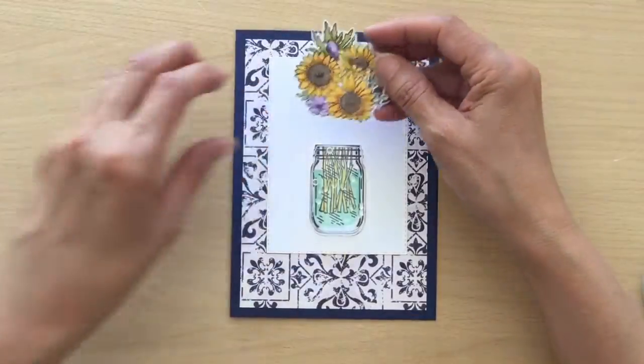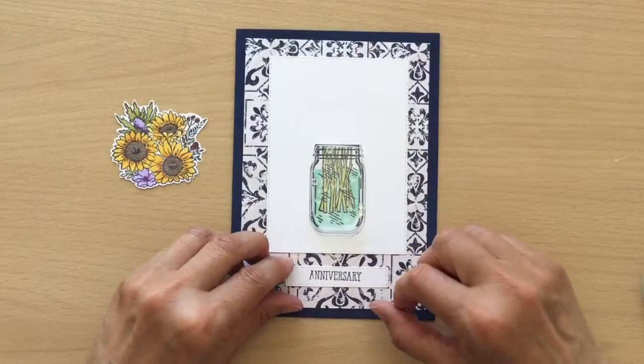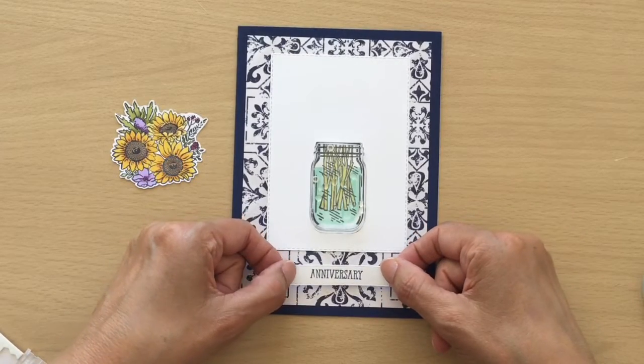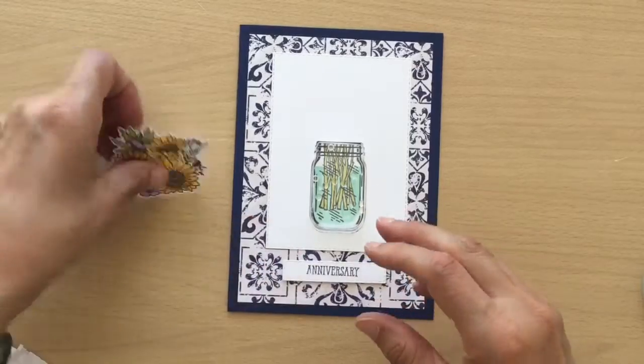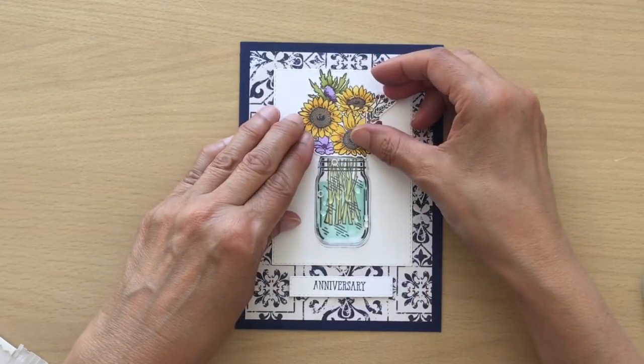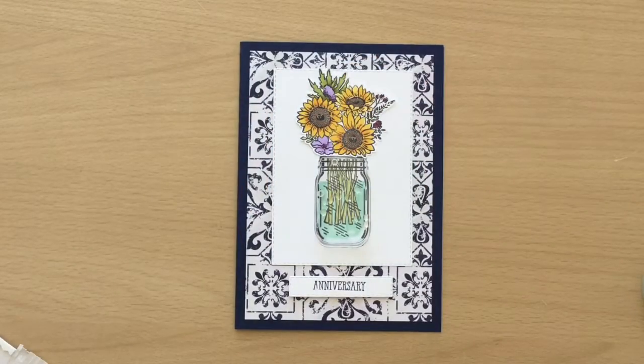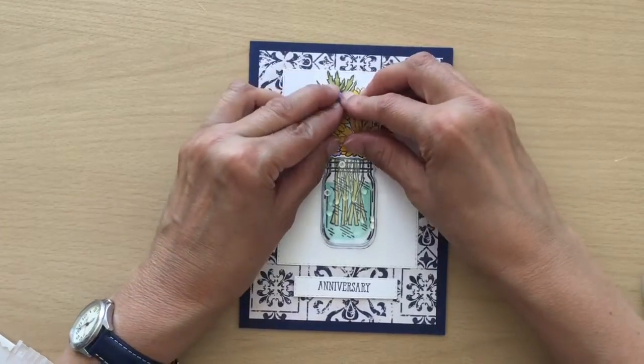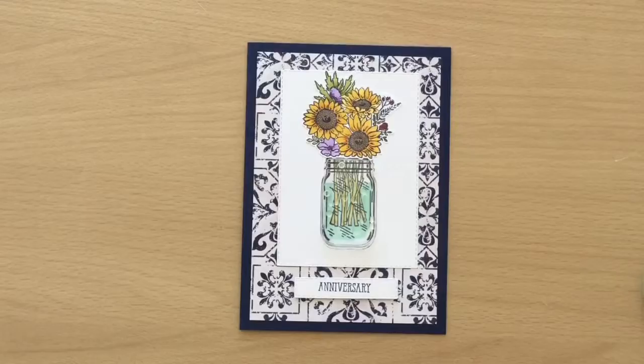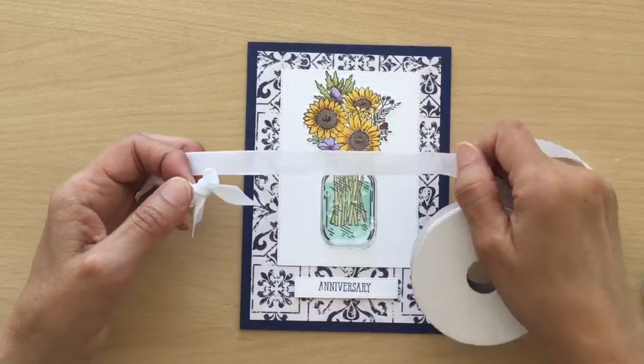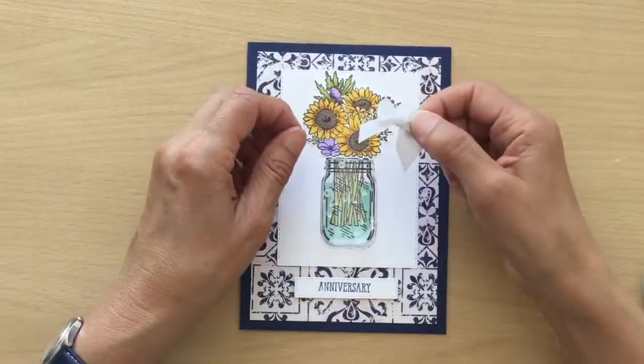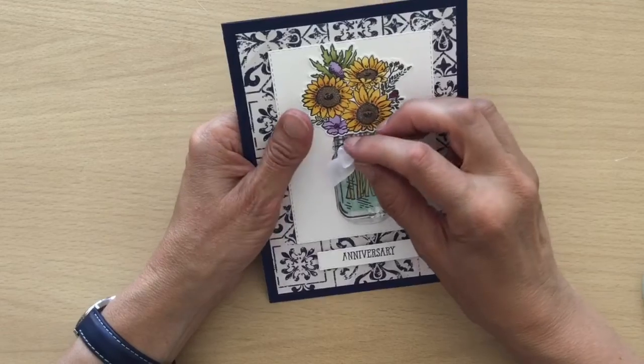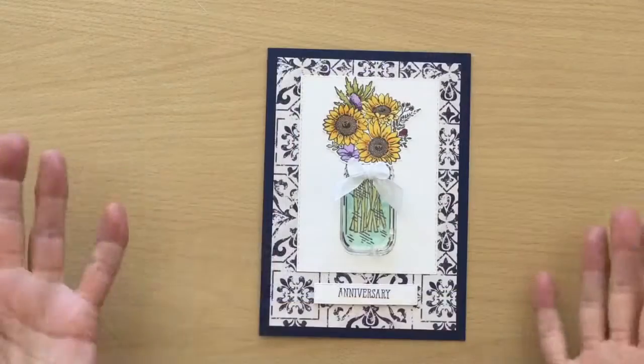So next we can put a sentiment on. I'm going to pop that up on some mini dimensionals, and then I want to stick my sunflowers onto my card. I've used this really pretty white ribbon and I've made a little bow, and I'm going to pop that on the center of my jar. And there you go, finished.